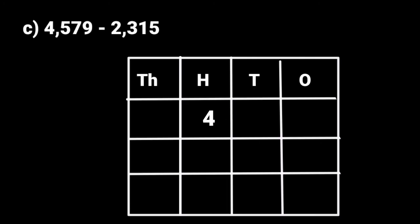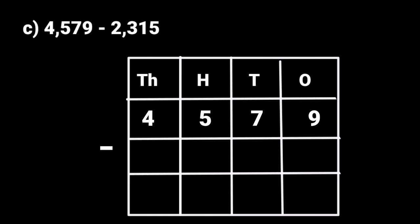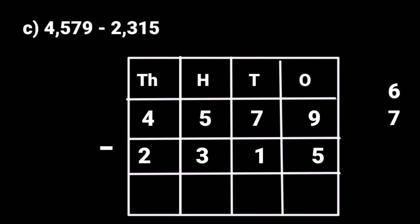In C, 4,579 minus 2,315. Now let's see the answer. First we have to subtract from the 1's place: 9 minus 5. Now we can subtract 5 from 9, so the answer is 4.